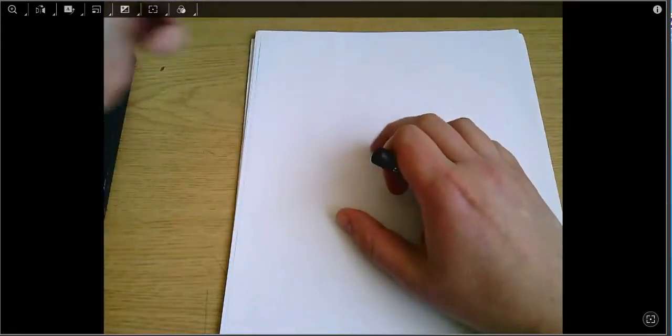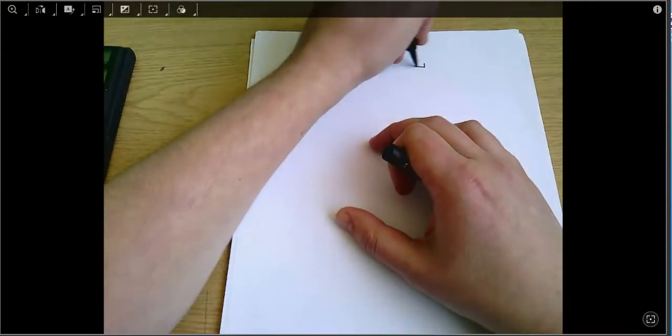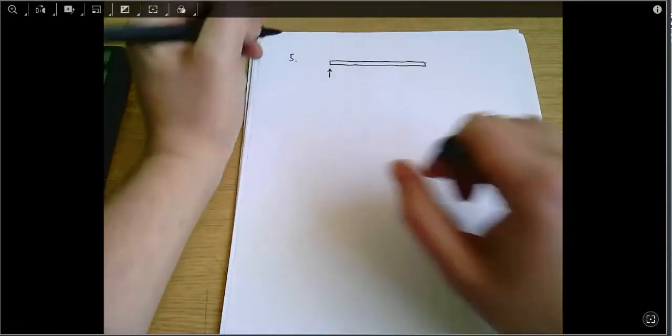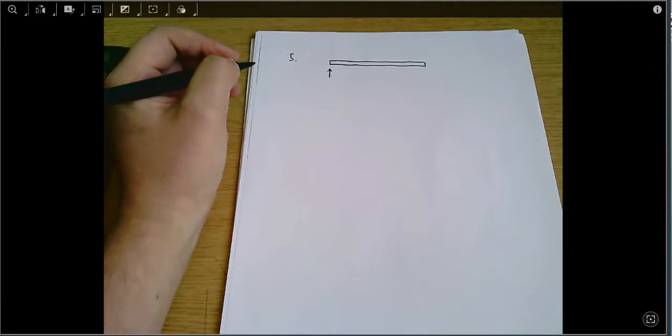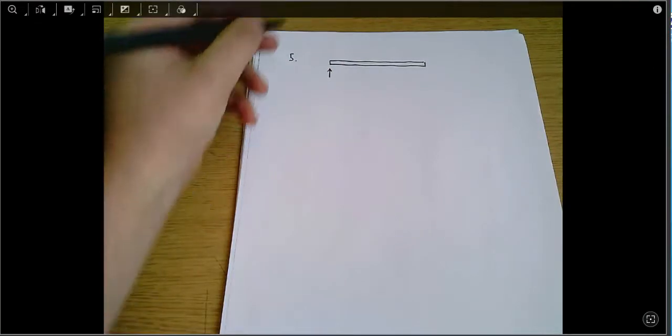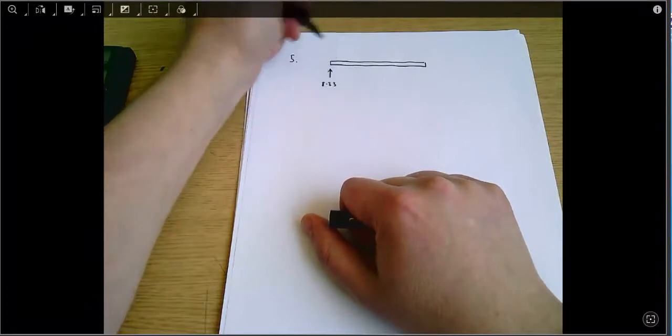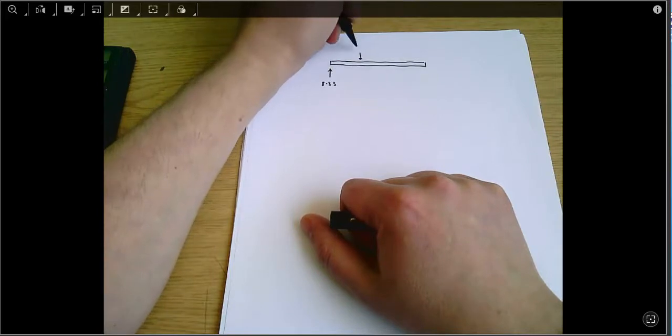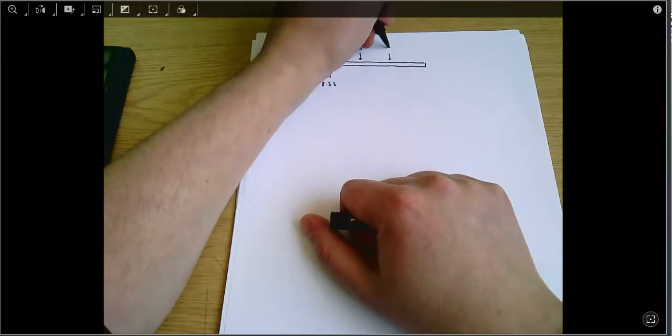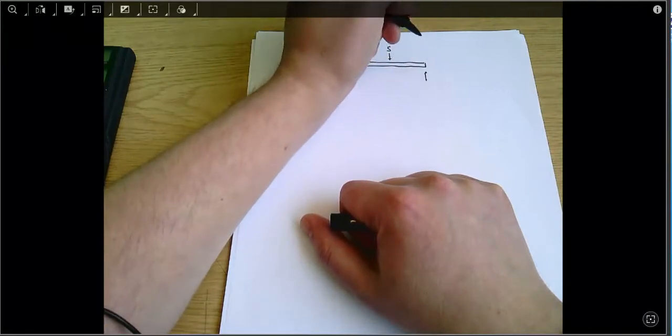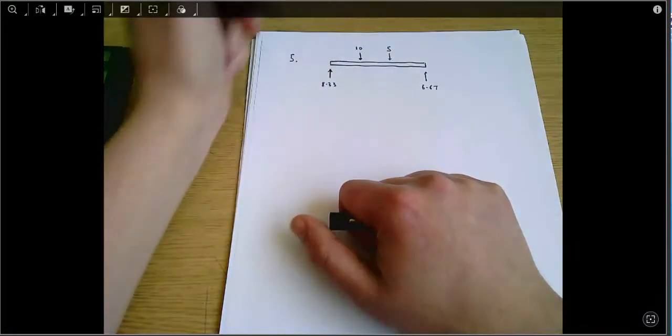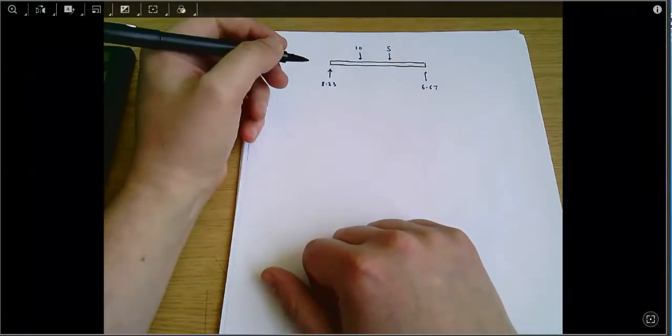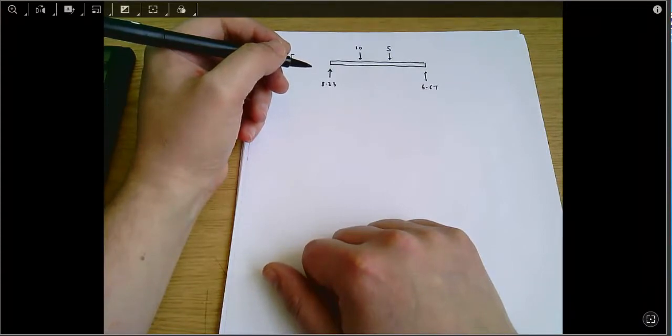So again I'll just start by drawing my diagram so I know exactly what's going on. The diagram looks like this. We've got RA which I calculated in the previous part of the question was 8.33. This value here is 10, 5, and RB which I've calculated is 6.67.